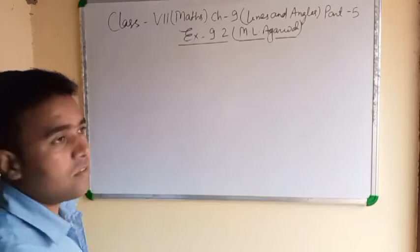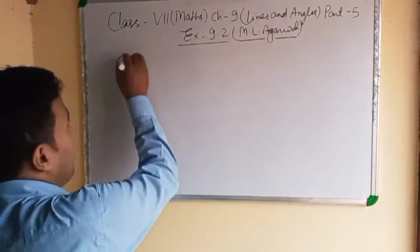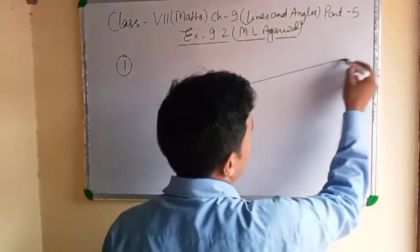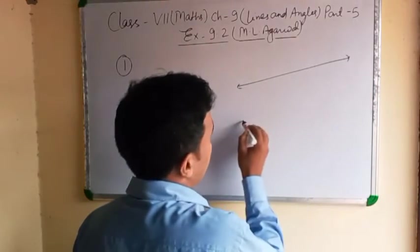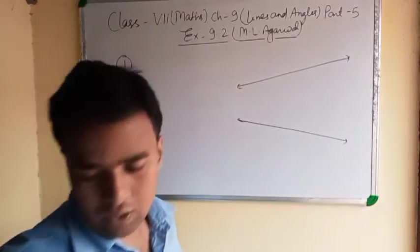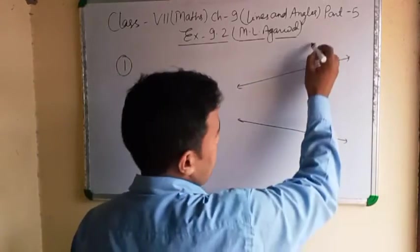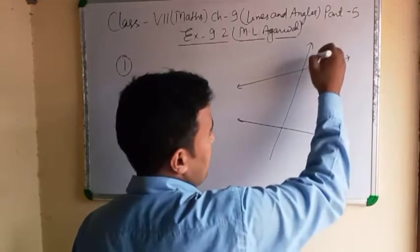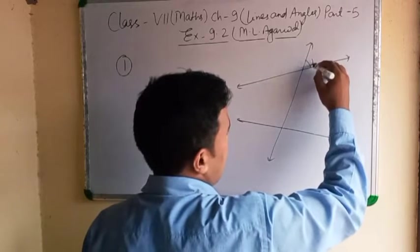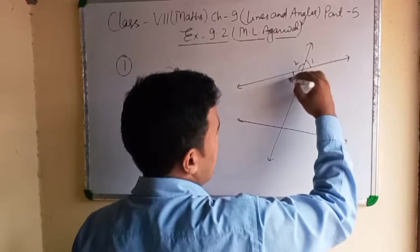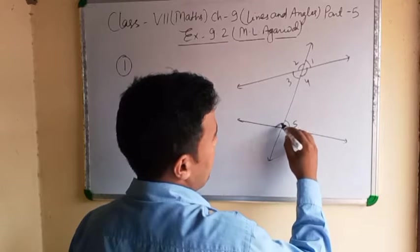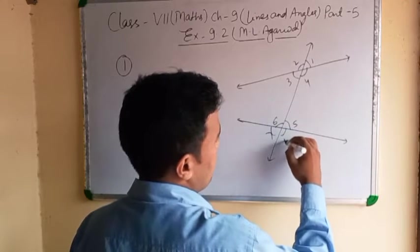First of all, we will make the figure — whatever figure is given, I will draw it. It is a transversal line. Angles are given: 1, 2, 3, 4, 5, 6, 7, 8.